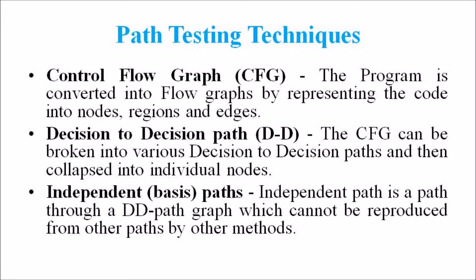2. D2D, that is Decision to Decision path - The control flow graph can be broken into various D2D paths and then collapsed into individual nodes. 3. Independent or basis path - An independent path is a path through a D2D path graph which cannot be reproduced from other paths by other methods.